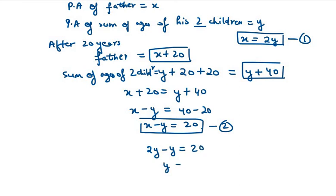That means the age of his two children is 20 and father's age will be x equals 2y. So it will be 2 into 20, that will be 40.